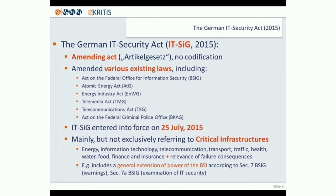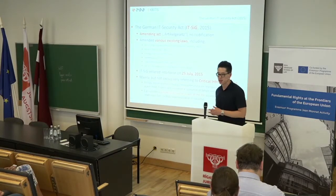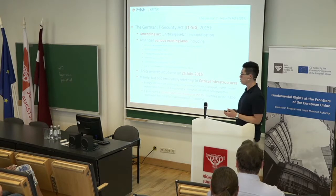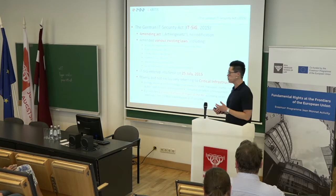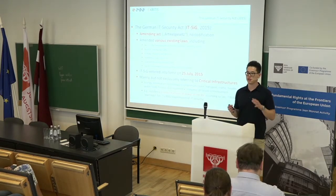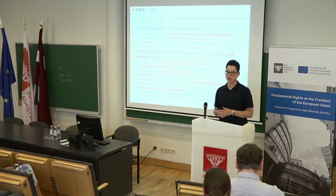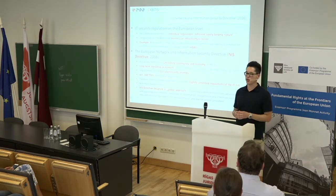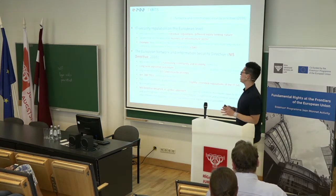As mentioned before, this law is not only referring to critical infrastructures for the protection of the country and the people living there. It also includes a general extension of the Federal Authority for Information Security of Germany. For example, the BSI has the possibility to issue warnings towards consumers of some products or to do an examination of IT security if there might be any IT security flaws for consumer products. When we take a look at cybersecurity regulation on the European level, we find a similar situation compared to Germany because there is also no codification for IT security issues.